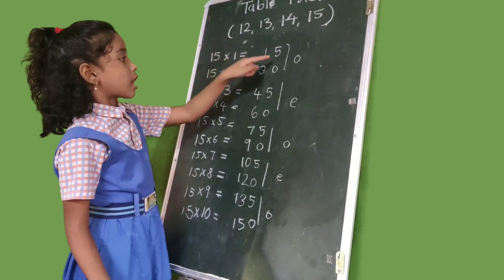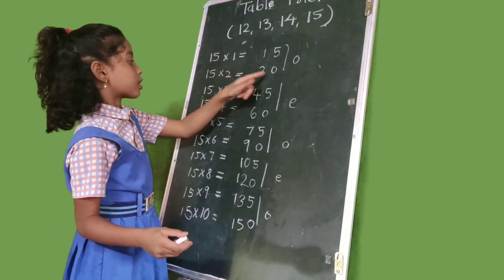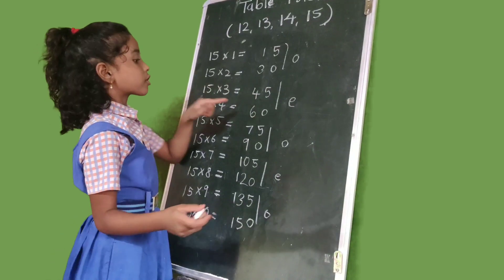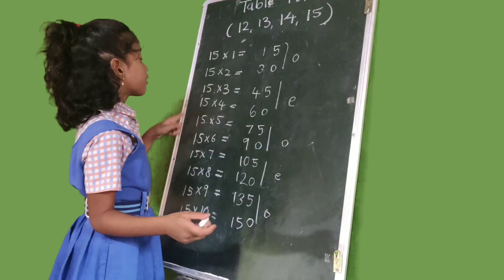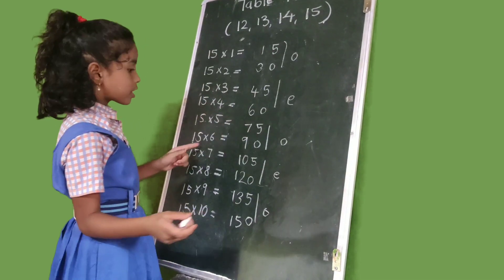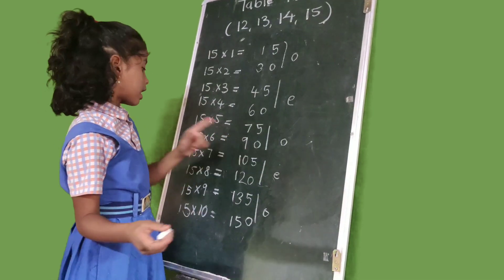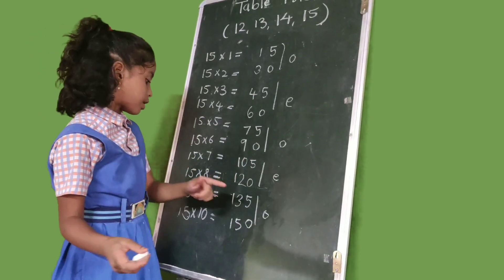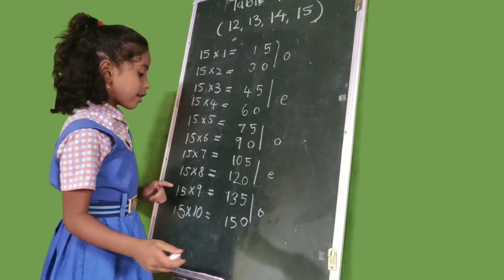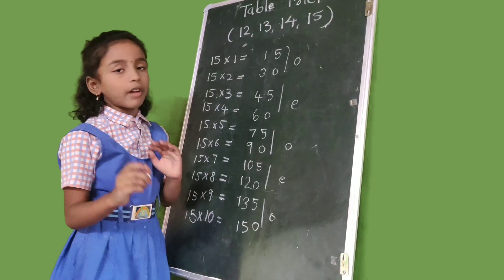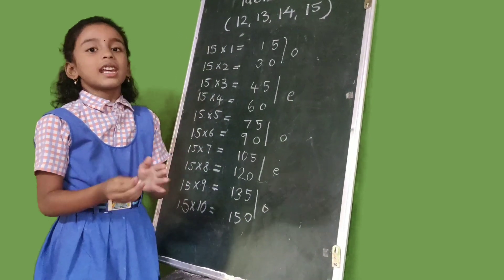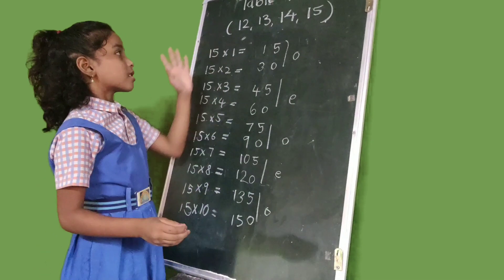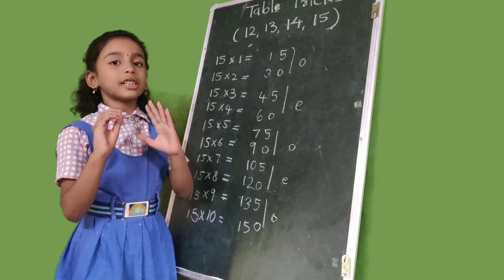15×1=15, 15×2=30, 15×3=45, 15×4=60, 15×5=75, 15×6=90, 15×7=105, 15×8=120, 15×9=135, 15×10=150. These are the 12 to 15 table tricks.